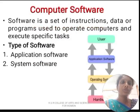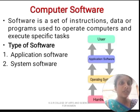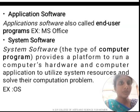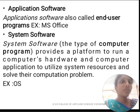Next, we are going to see about computer software. Software is a set of instructions, data, or a program used to operate computers and execute specific tasks. There are two types of software: application software and system software. Application software is also called end-user programs — for example, Microsoft Office.